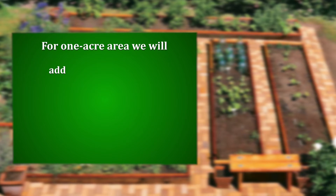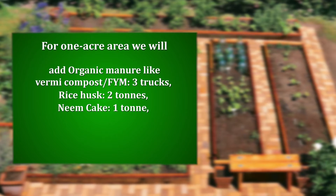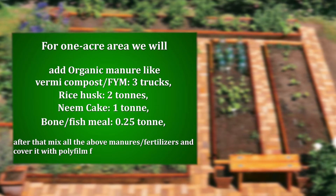For one acre land area, we will add organic manure like vermicompost or FYM — three trucks, rice husk two tons, neem cake one ton, and bone or fish meal 0.25 tons. After that, mix all the above manures and fertilizers and cover it with polyfilm for solarization for two to three weeks.